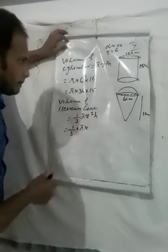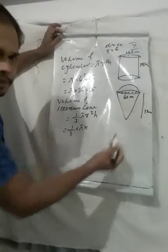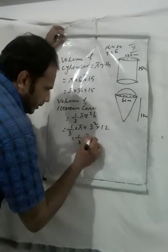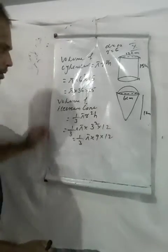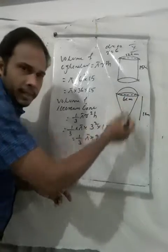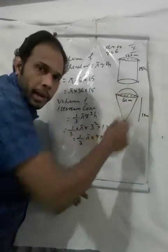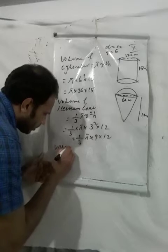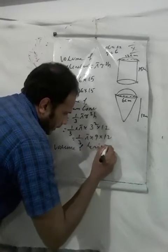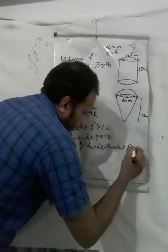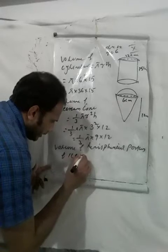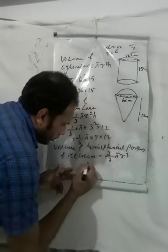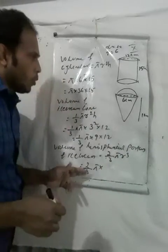For the cone portion: height H equals 12. Volume equals one-third π into 9 into 12. For the hemispherical portion of the ice cream, volume equals two-thirds π r³, which equals two-thirds π into r cubed. The cone diameter is 6 cm so the radius r equals 3.